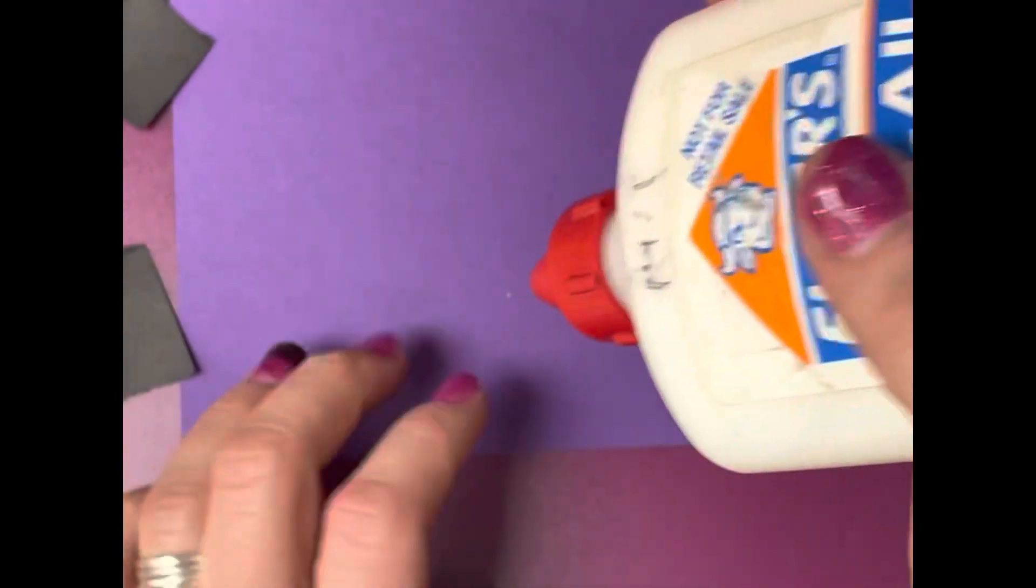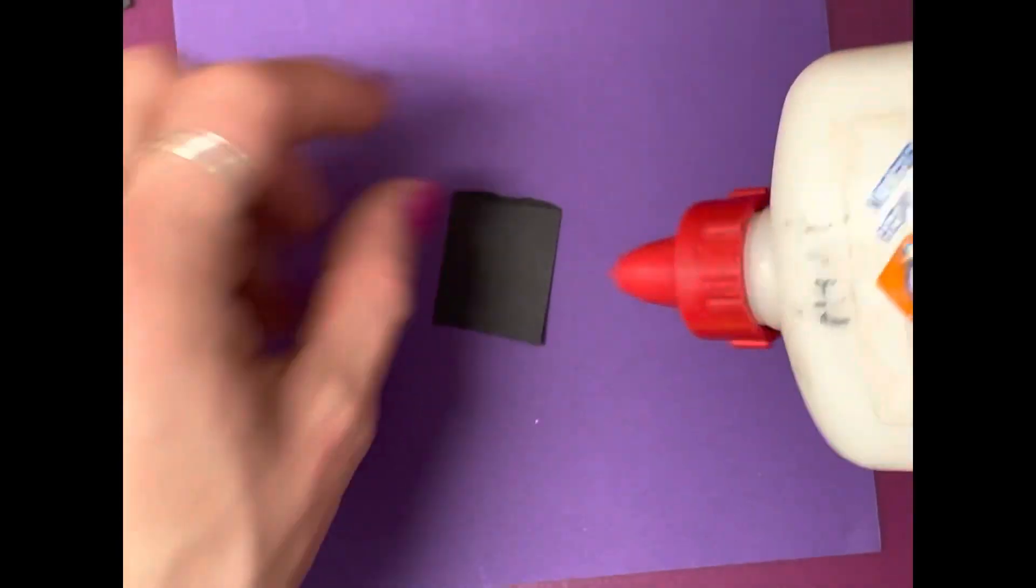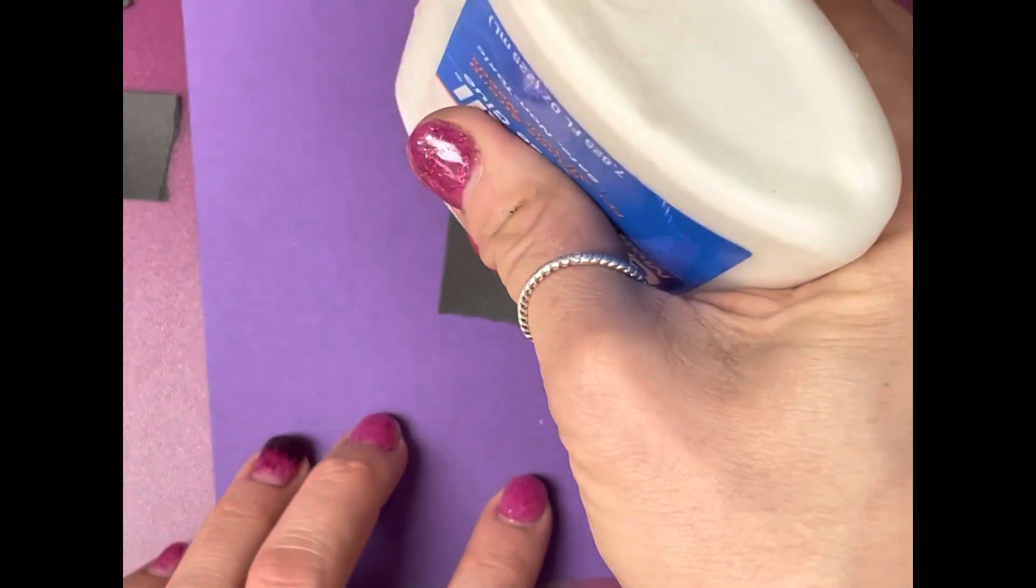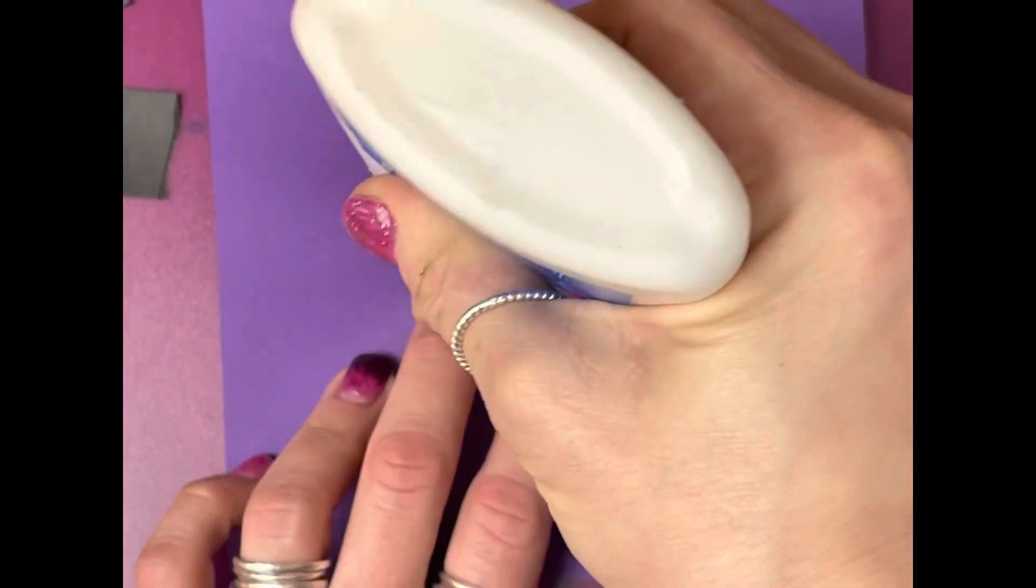Then you've got to wait for the glue to settle to the bottom. Once it's at the bottom, you can just put it on the paper, push and squeeze. It's just going to leave a little dot.